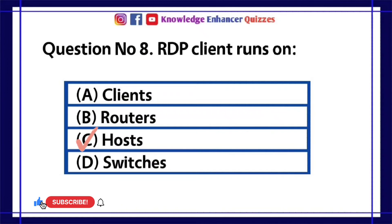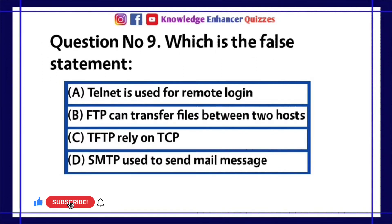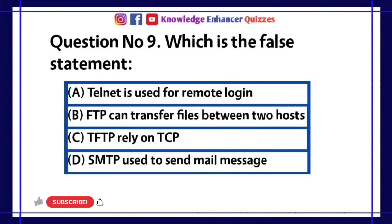Option C is the right answer. Question number 9: Which is the false statement? A. Telnet is used for remote login. B. FTP can transfer files between two hosts. C. TFTP relies on TCP. D. SMTP is used to send mail messages.